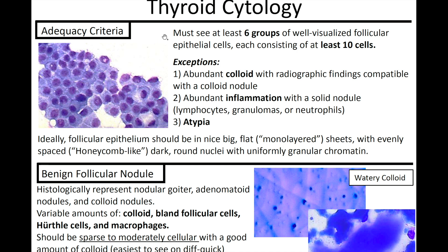We're going to start out by going over the adequacy criteria. So let's say you're on a procedure — what do we need to see for the specimen to be considered adequate? We must see at least six groups of well-visualized follicular epithelial cells, each consisting of at least 10 cells. Some exceptions: you can have abundant colloid with radiographic findings compatible with a colloid nodule, or abundant inflammation with a solid nodule or atypia.